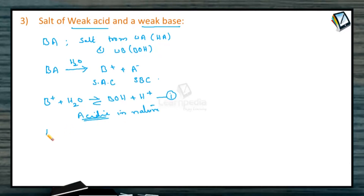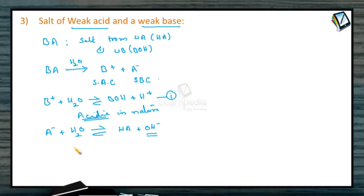What about the anion? A⁻ anionic hydrolysis also takes place, as it is a strong conjugate — it reacts with water to give HA, the weak acid, plus OH⁻. The greater the extent to which anionic hydrolysis takes place, the more OH⁻ in the solution, and therefore the solution becomes basic in nature. So whether the aqueous solution is acidic or basic depends upon the relative strength of B⁺ and A⁻.